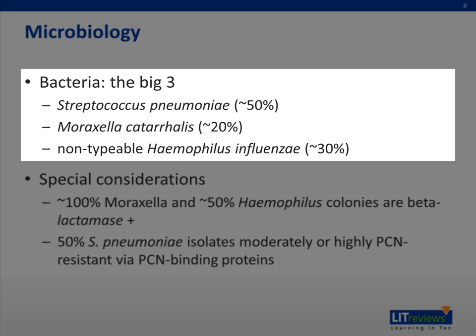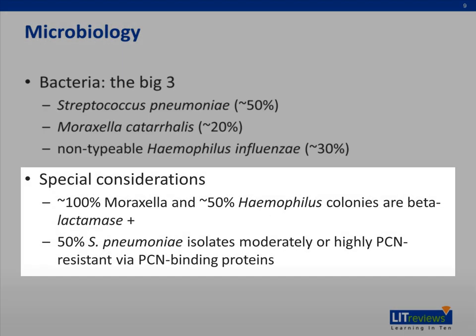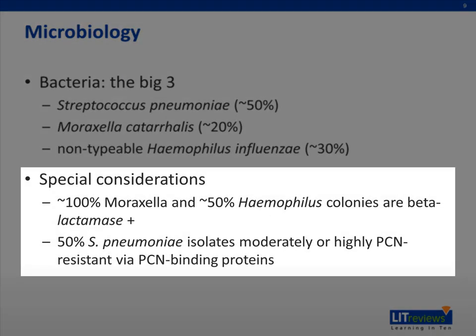There are three bacteria responsible for the majority of cases of AOM in children: Streptococcus pneumoniae, Moraxella catarrhalis, and non-typable Haemophilus influenzae. Note that AOM can be the result of a polymicrobial infection, and the percentages listed on the slide represent the percentage of children from whom a particular bacteria is isolated, not the percentage of episodes of AOM due primarily to that particular bacteria. It is important to consider the most likely causative agent when treating AOM, as it affects antibiotic selection.